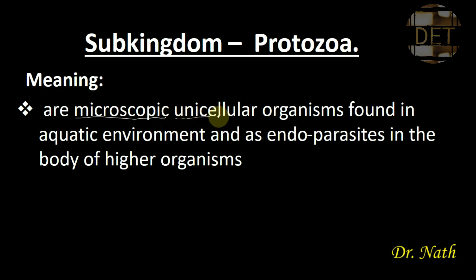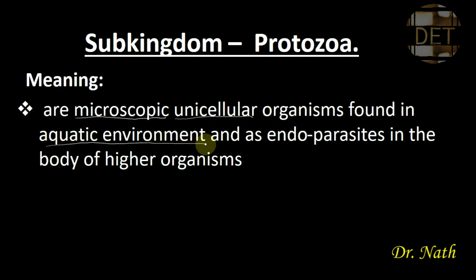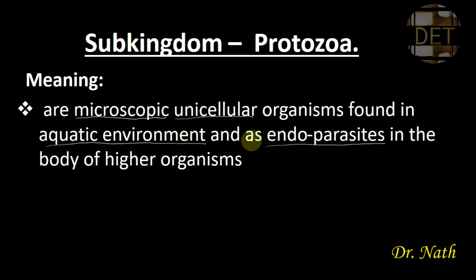They are unicellular, meaning these organisms are made up of one cell. Protozoa are microscopic unicellular organisms found in aquatic environments or as endoparasites in the body of higher organisms. These are the four key words in the definition.